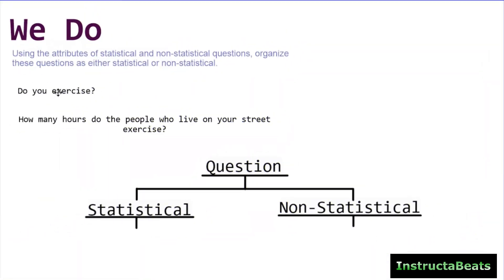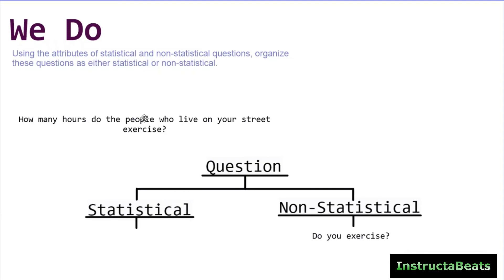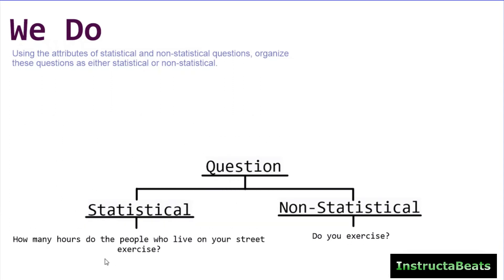Let's do a 'we do' problem. My first question says 'do you exercise?' and the second question says 'how many hours do the people who live on your street exercise?' The first is a non-statistical question because you're anticipating one response — either yes or no — you're only asking one person. Whereas for the second question, you're going to be going down your street asking a bunch of different people and collecting data. The population is going to provide the variation in your data, because some people work out zero hours, some might work out ten hours, some might work out five. The population provides the variation, which makes this a statistical question. We can expect variation in the data we're collecting, and it's going to be natural variation because it's created by asking different people the same question.